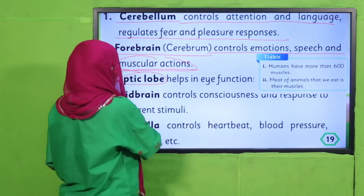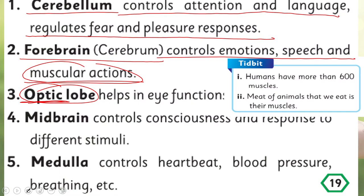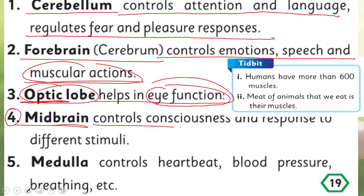Then comes the optic lobe. 'Optic' is related to your eyes — it helps in eye function and controls your eyesight. Number four is the midbrain, which controls consciousness and response to different stimuli. Your different senses are related to the midbrain.